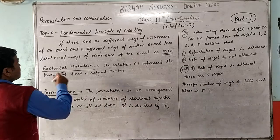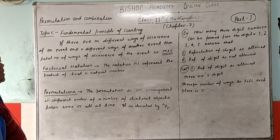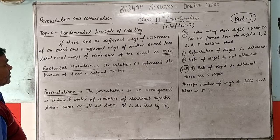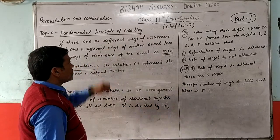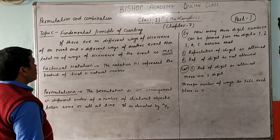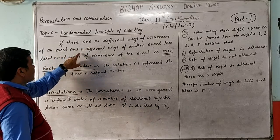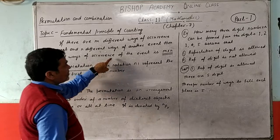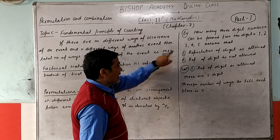Definition: If there are M different ways of occurrence of one event and N different ways of occurrence of another event, then by the fundamental principle, the total number of ways of occurrence of both events is M multiplied by N.